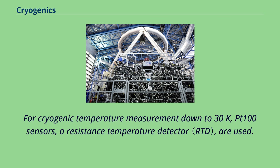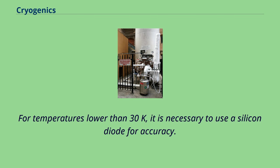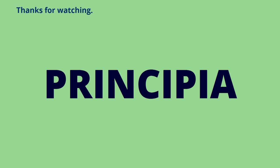For cryogenic temperature measurement down to 30K, Pt100 sensors — resistance temperature detectors — are used. For temperatures lower than 30K, it is necessary to use a silicon diode for accuracy.